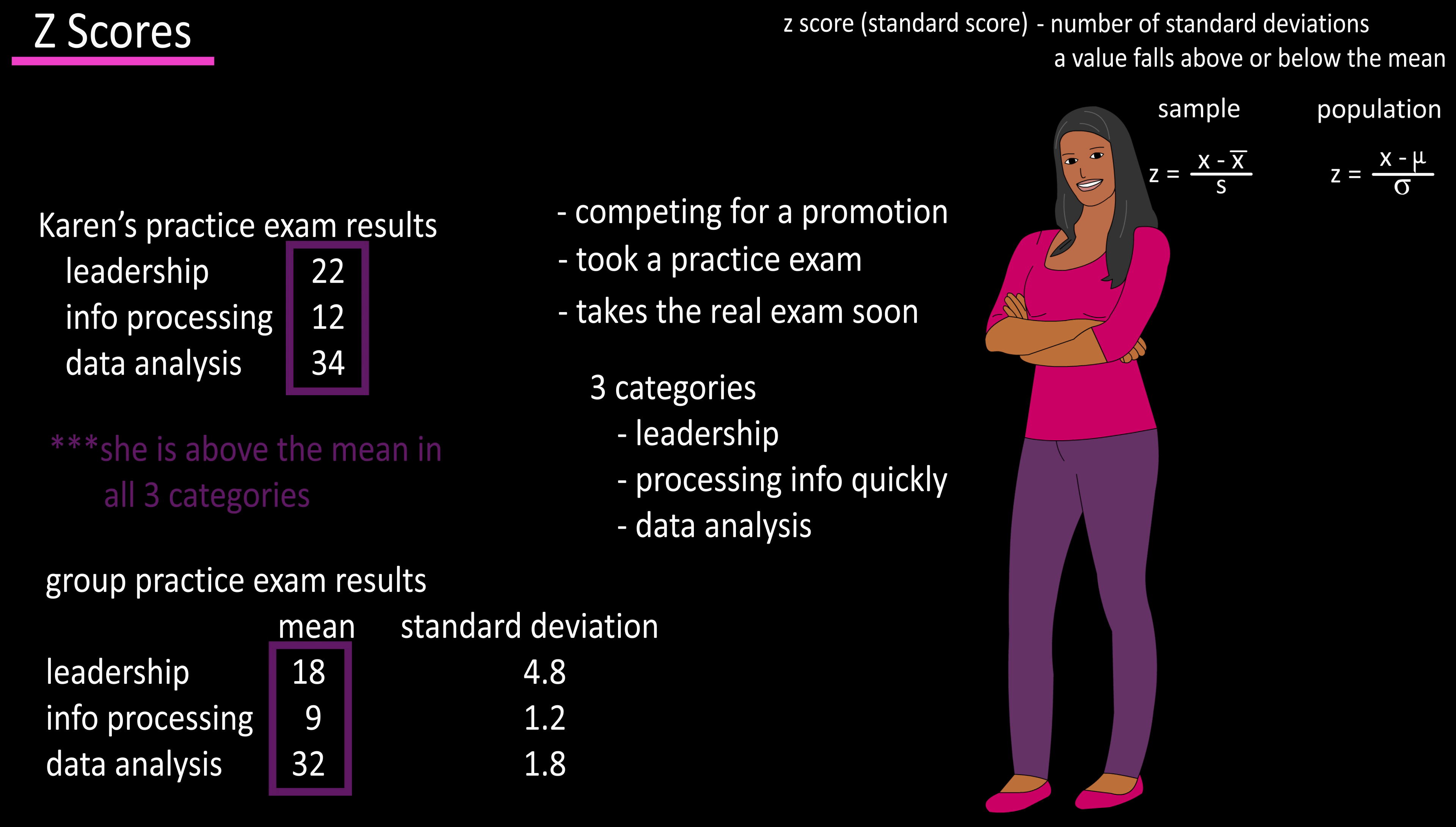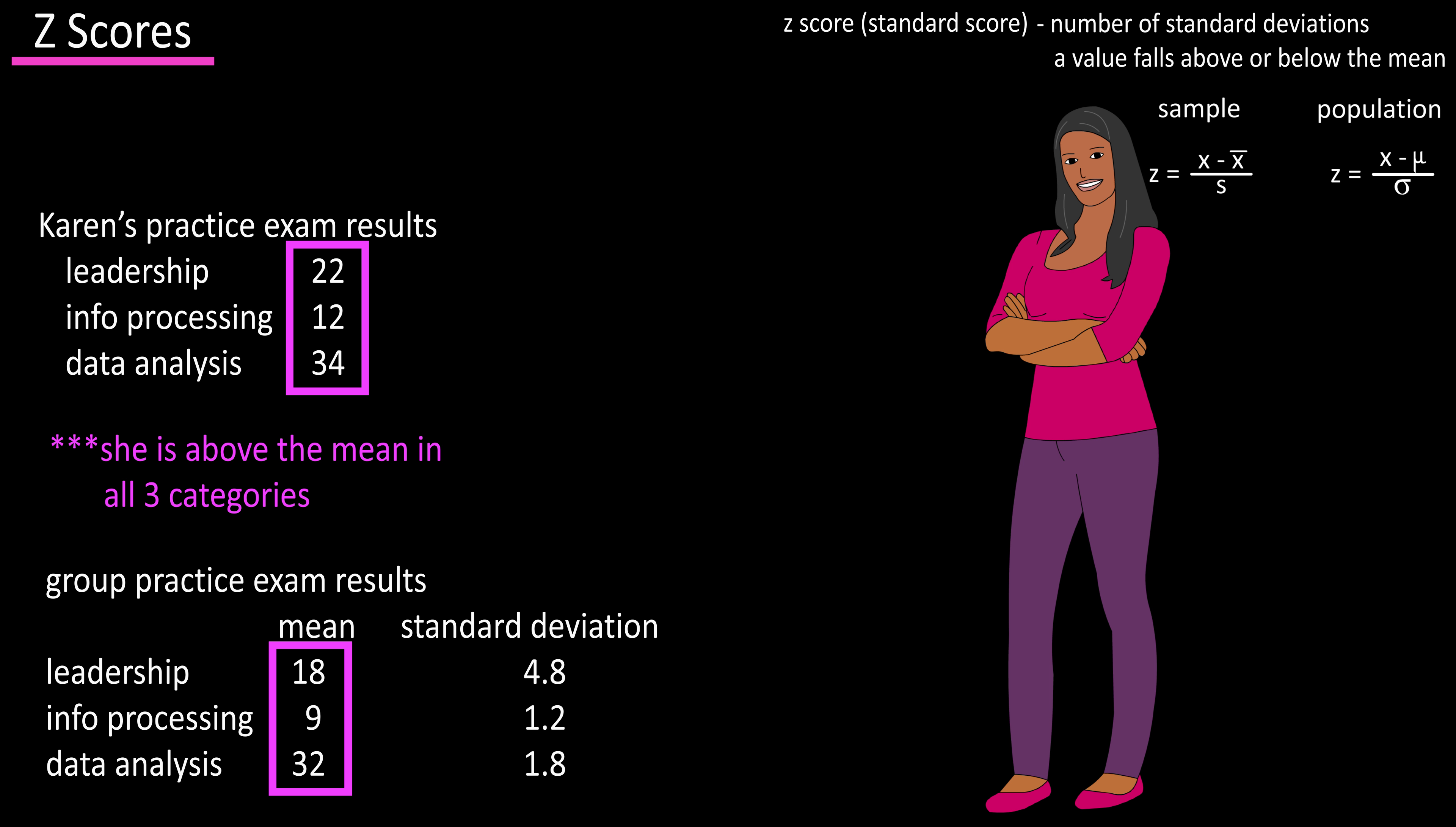The good thing is that Karen was above the mean in all three categories, but she has three weeks to study for the real exam and wants to put most of her study time into her weakest categories. To find this out, she can calculate her z-scores for each of the categories to give her an idea of what she's weakest at compared to the other applicants.